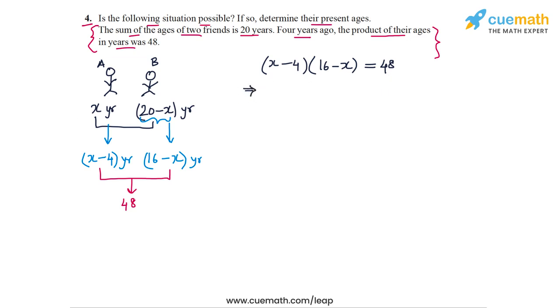So let's first expand the product on the left side. We have x into 16, so that's 16x. And then we have x times minus x, so that's minus x squared. Then we have minus 4 times 16 is minus 64. And then we have minus 4 times minus x, that's plus 4x. This is equal to 48.